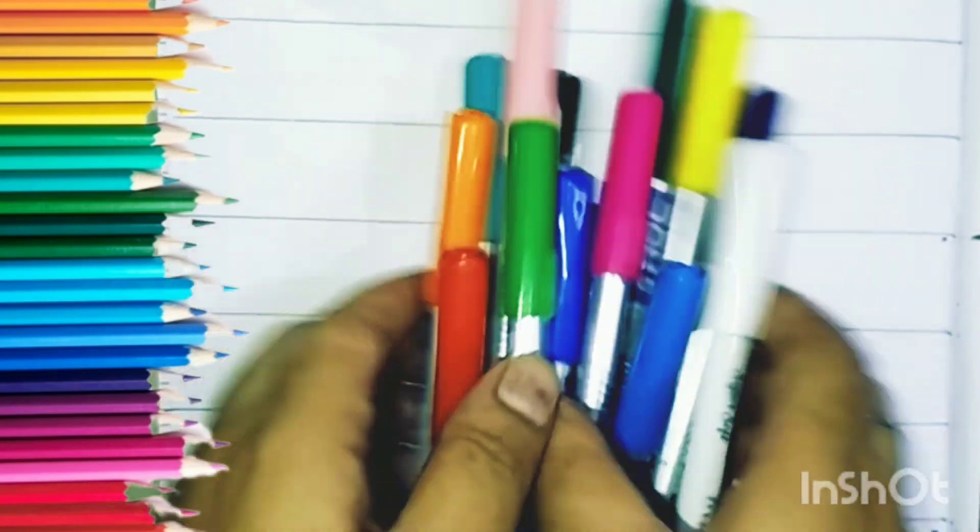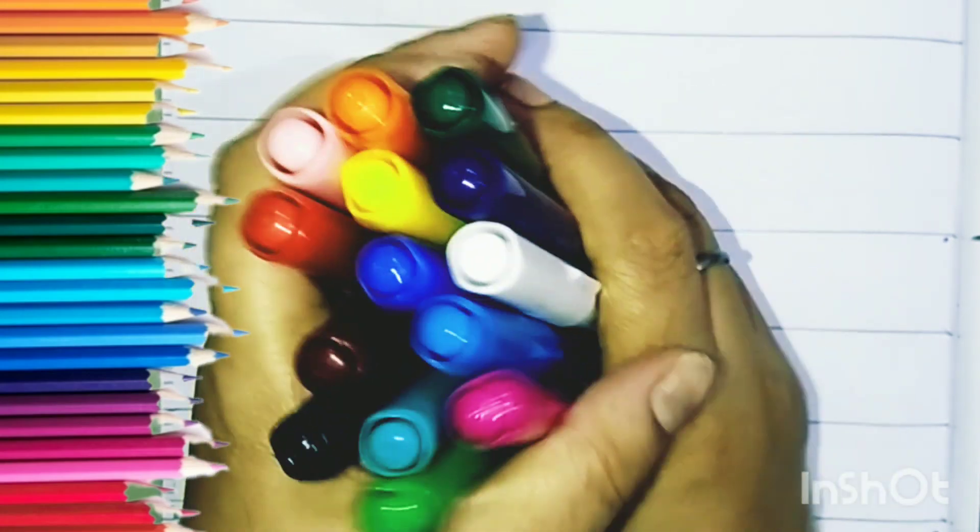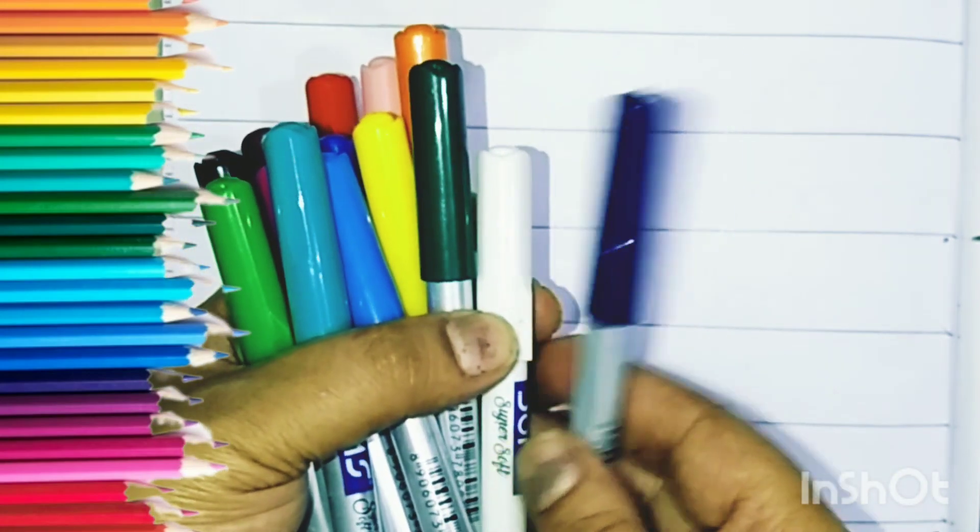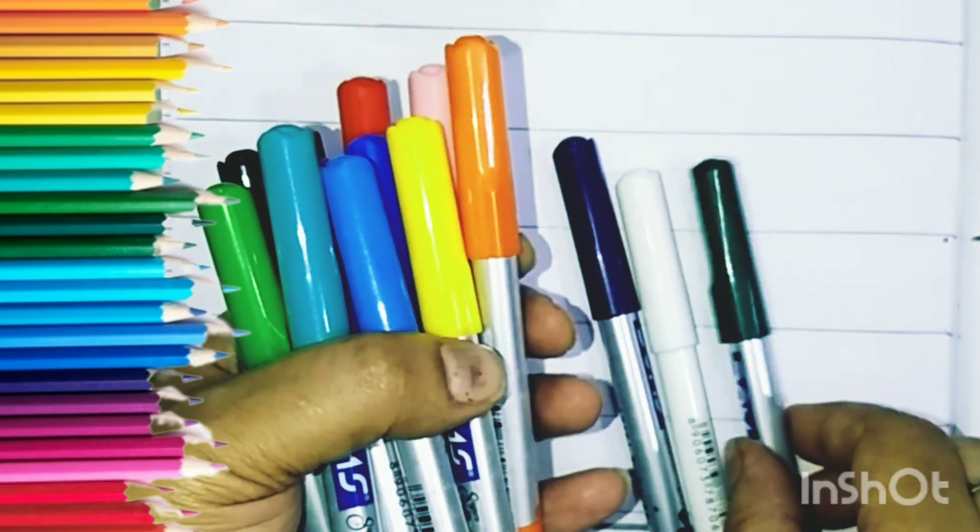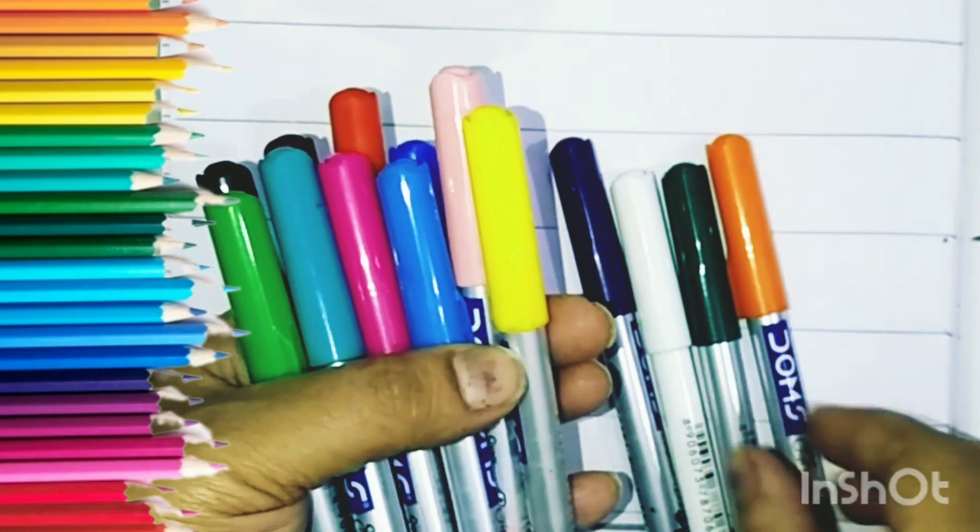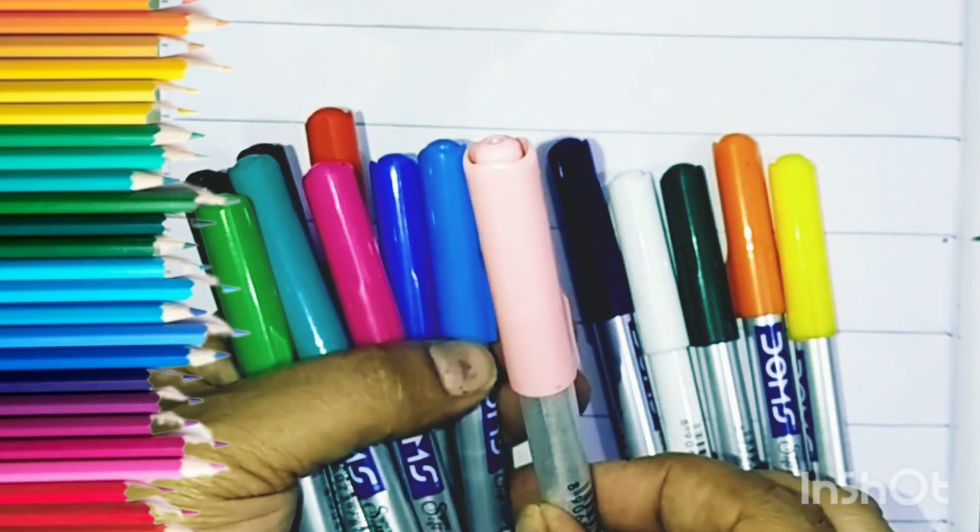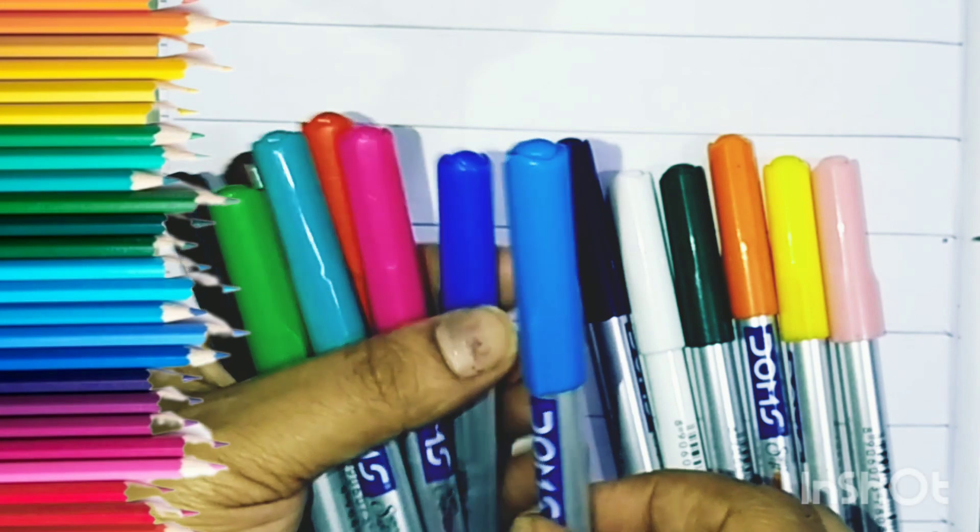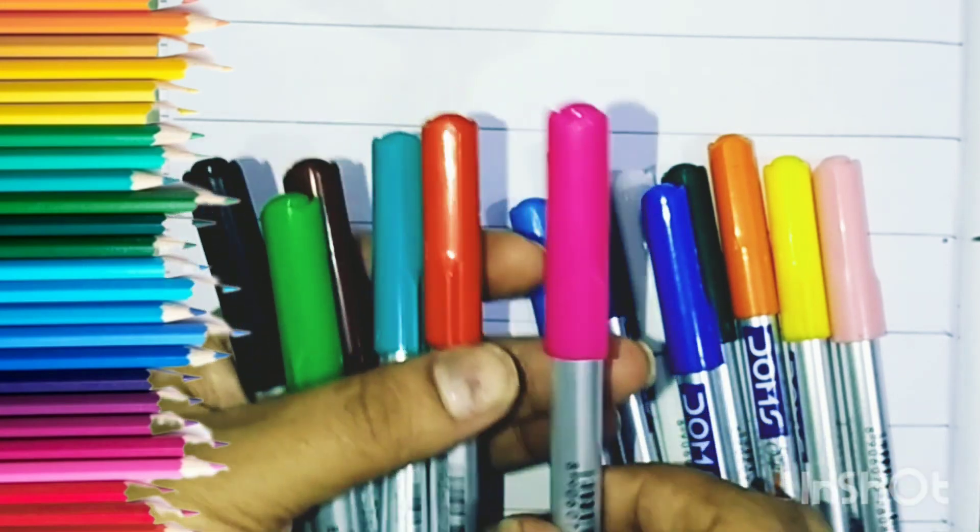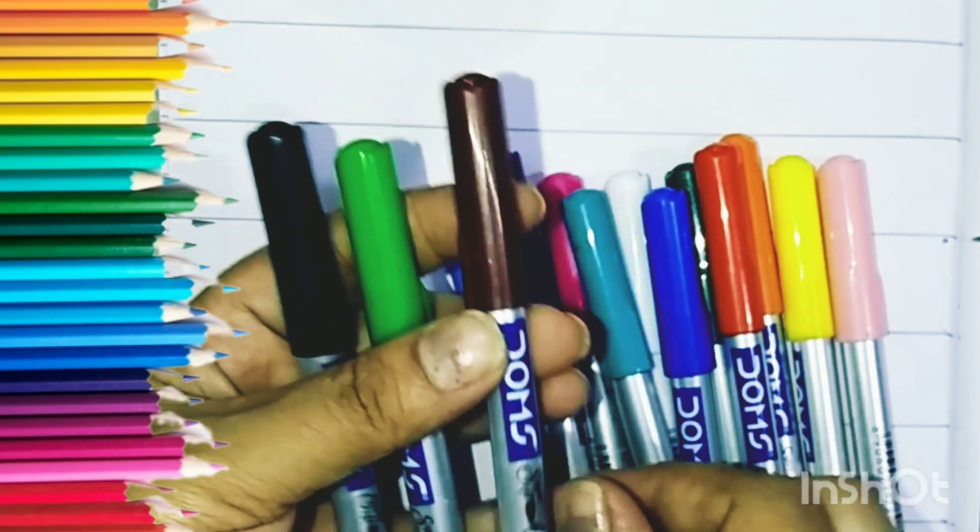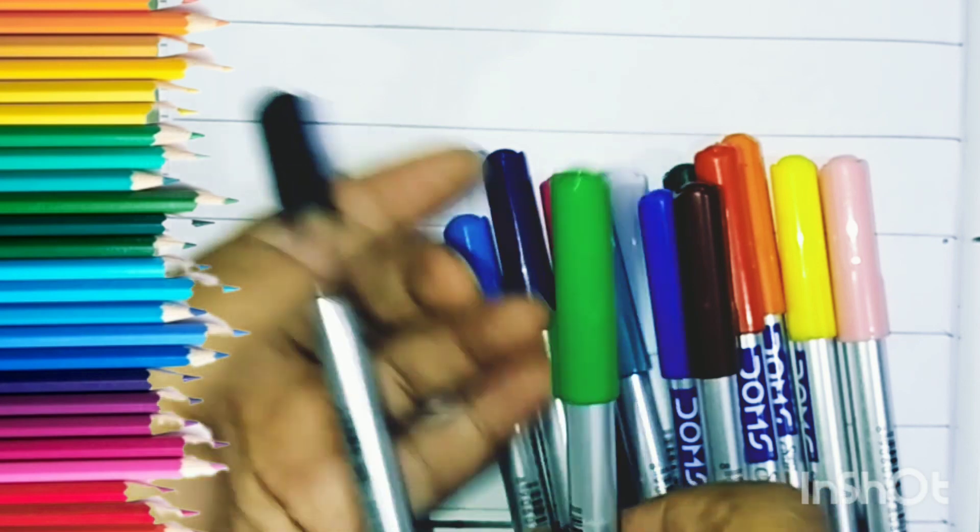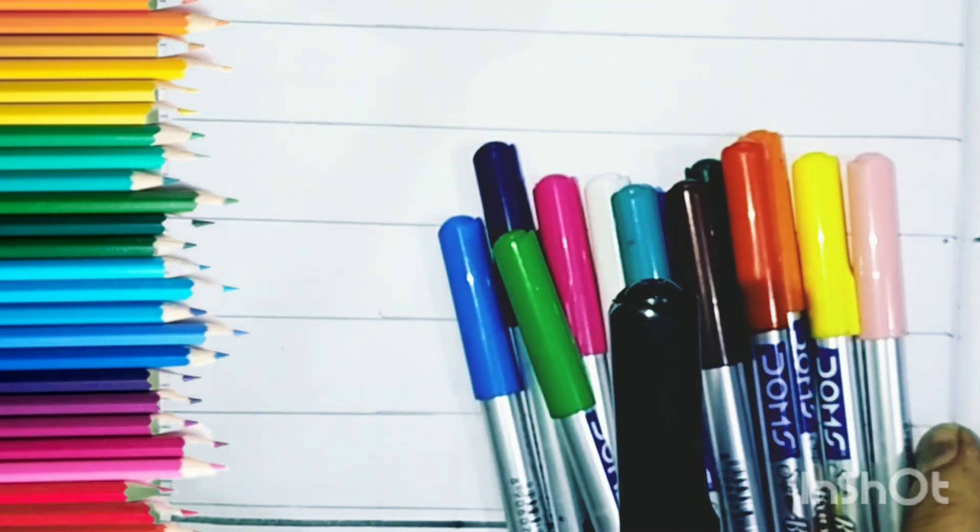Hello kids, now let us start the colors learning. We have lots of colors and beautiful colors. Let us learn indigo, white, deep green, orange, yellow, baby pink, sky blue, blue, pink, red, sea green, brown, green, and this is the last black color, beautiful black.